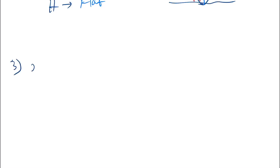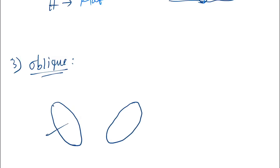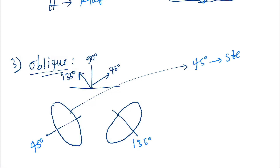In oblique astigmatism, the steep axis can be at 45 degrees or 135 degrees. When the 45-degree axis is the steep axis, that is one form of oblique; when the 135-degree axis is the steep axis, that is the other form.